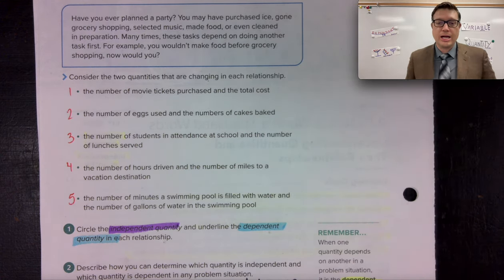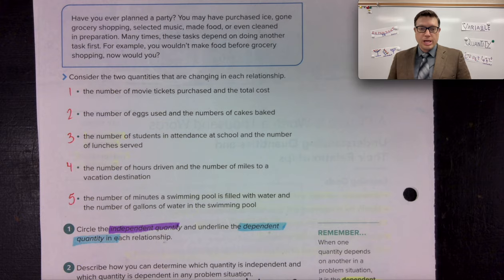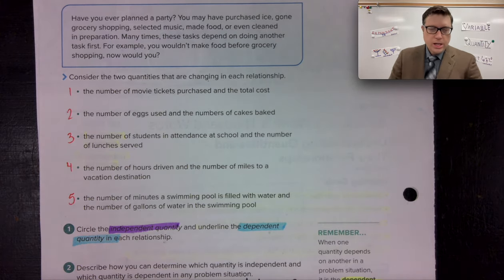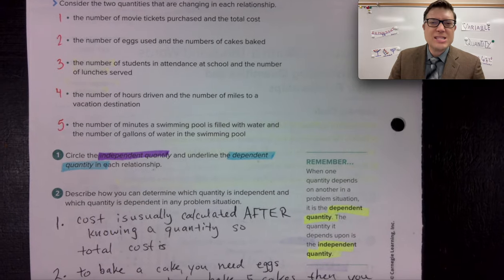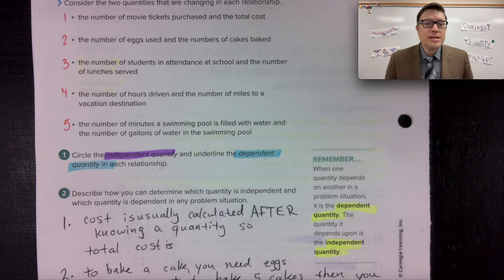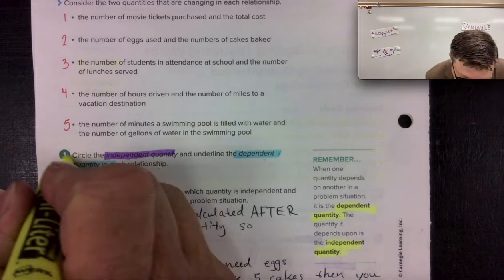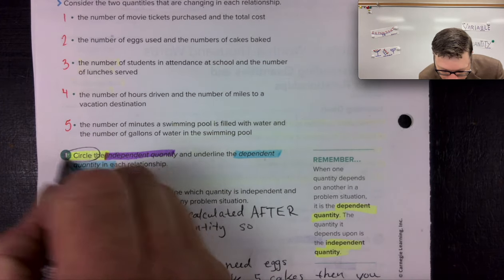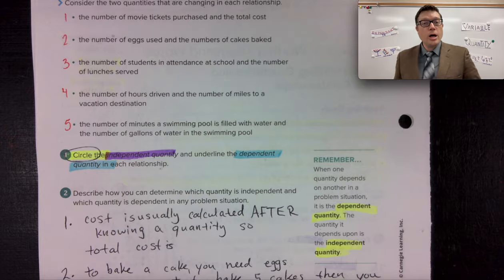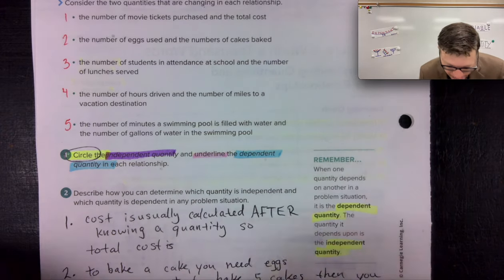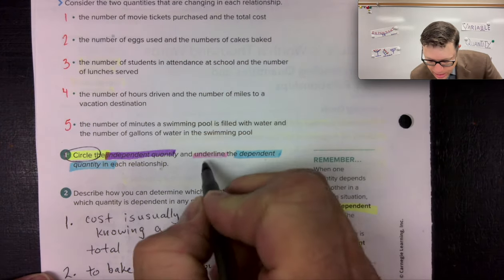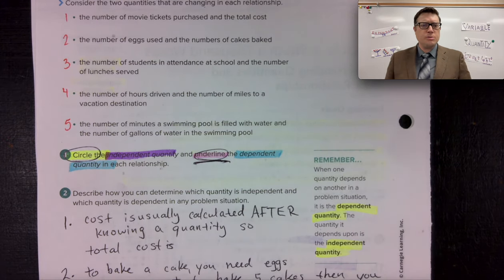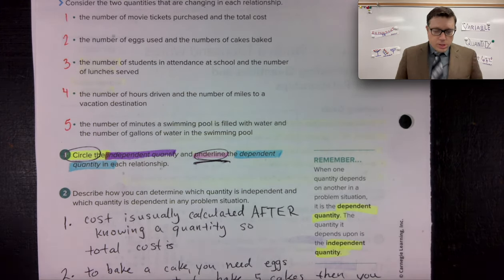We're going to circle the independent quantity and underline the dependent quantity in each relationship. I've got some highlighters — we're going to circle or highlight yellow the independent quantity and underline or highlight pink the dependent quantity in the situation.